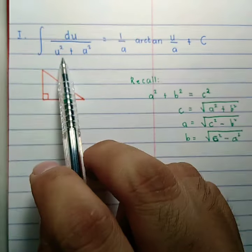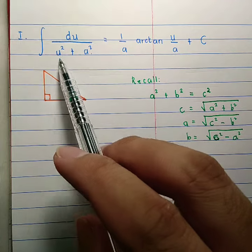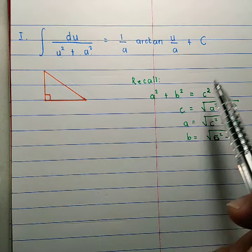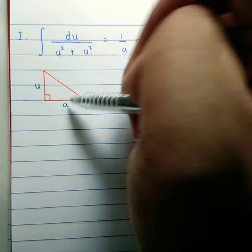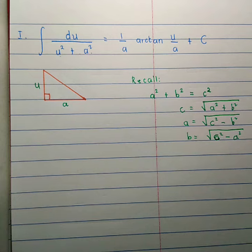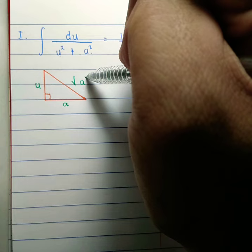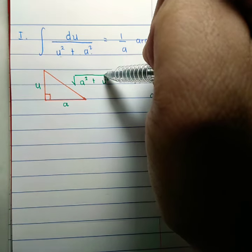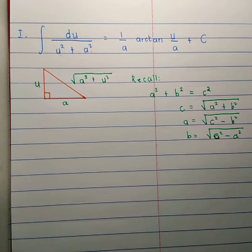Since in this case we have u squared plus a squared, we will use the two legs of the triangle. So one leg can be u and the other can be a. Consequently, the hypotenuse is equal to the square root of u squared plus a squared.